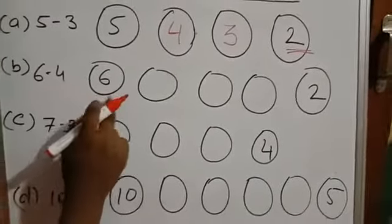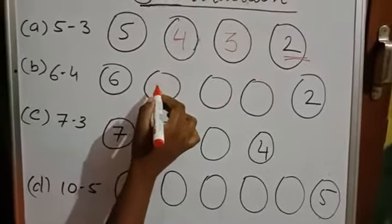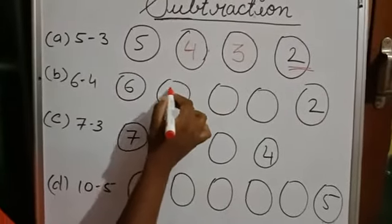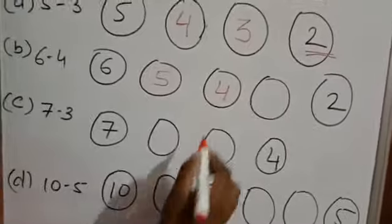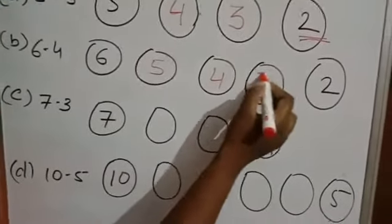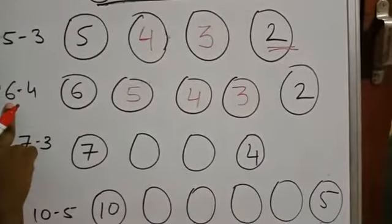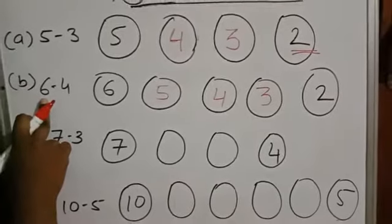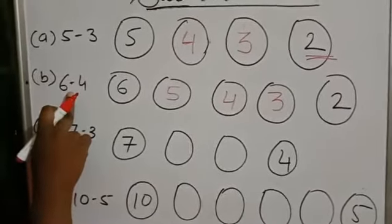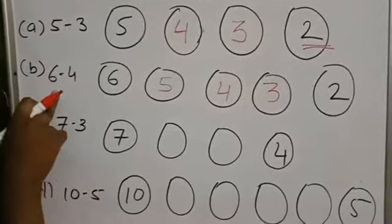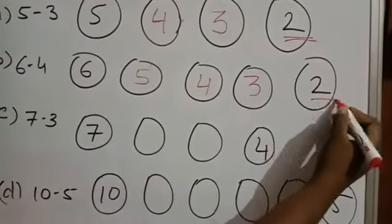The next one: 6 minus 4. Before 6 is 5, before 5 is 4, before 4 is 3. That means when we subtract 4 from 6, we are getting 2.